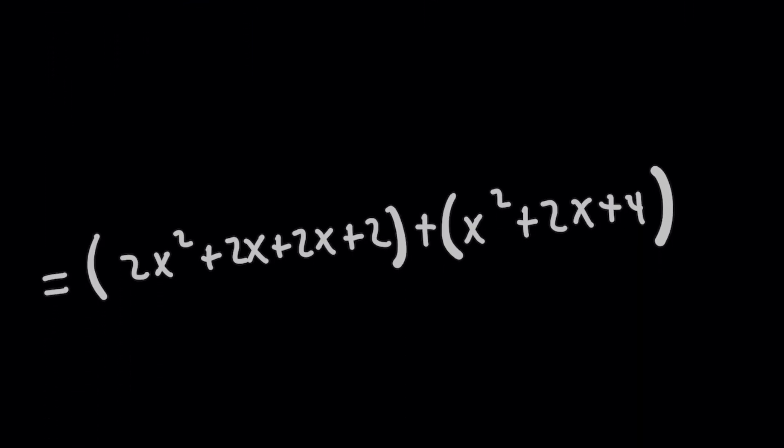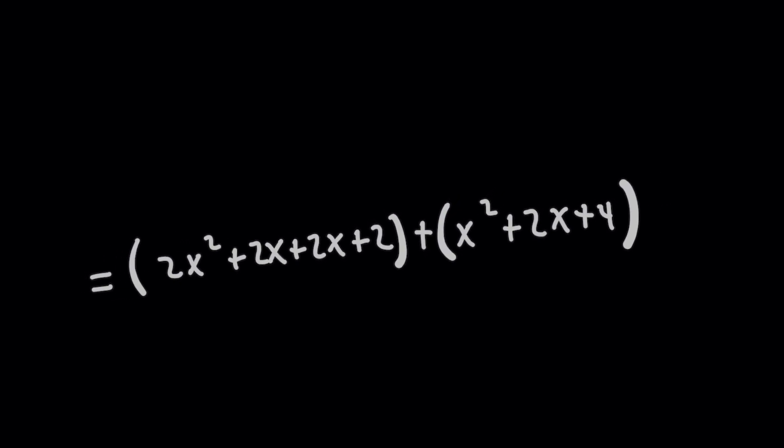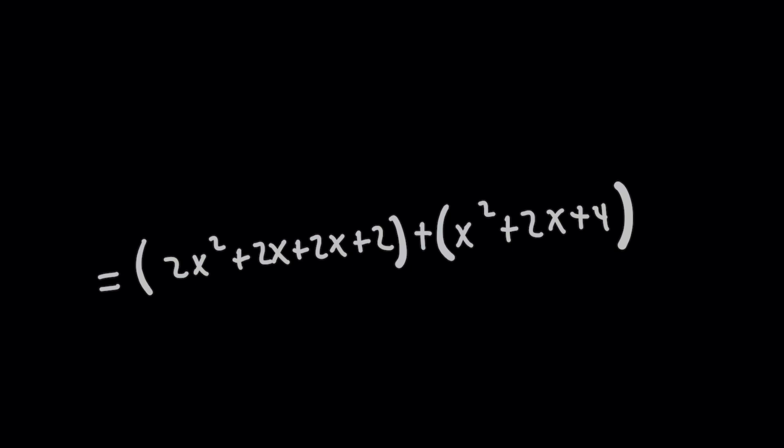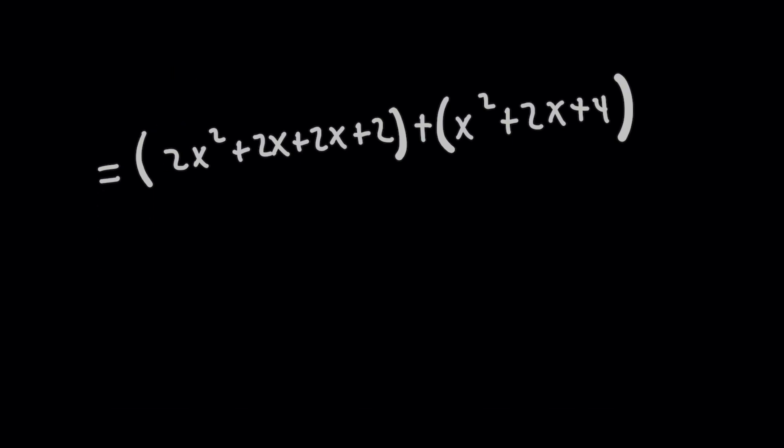But did you catch the thing I pointed out earlier about what happens when you cancel the top and the bottom where you had x minus 2? There is a domain restriction. In the original function, you had discontinuity at x equals 2 because you can't divide by 0, which means that for our final answer here.